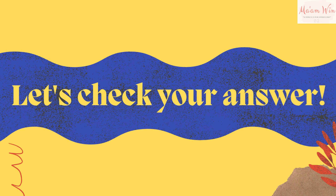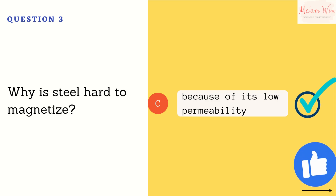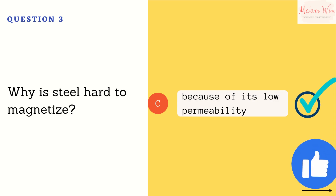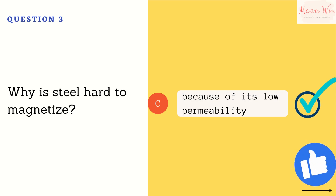Let's check your answer. The right answer is letter C, because of its low permeability. Permeability is the ability to support formation of magnetic fields in a material. Additional information: permeability is measured in henry per meter or newton per ampere squared.